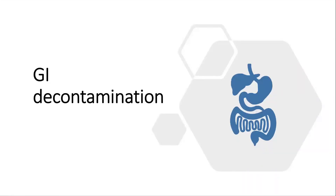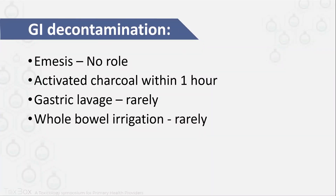Another thing you can do is GI decontamination, and part of it can be done in the primary healthcare setting. For emesis — inducing vomiting — it has no more role. Please do not induce vomiting or ask your patient to vomit. The risk far outweighs the benefit. Activated charcoal will be discussed in a moment. Gastric lavage and whole bowel irrigation are rarely indicated and not suitable for a primary healthcare setting — you need to secure the airway first.